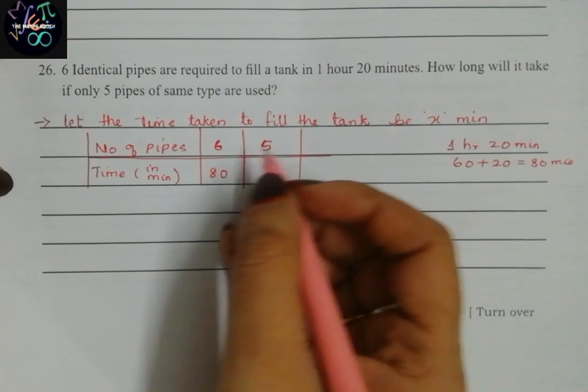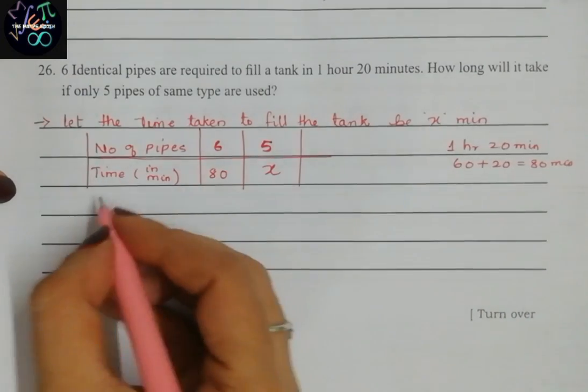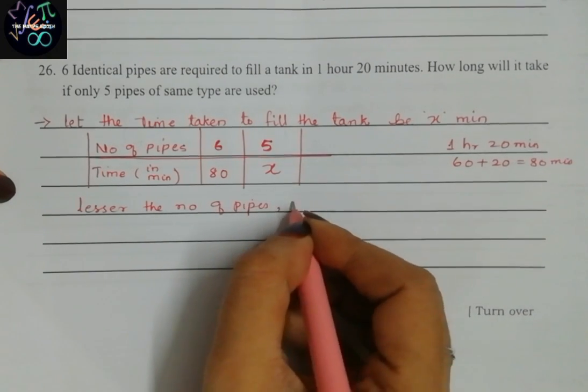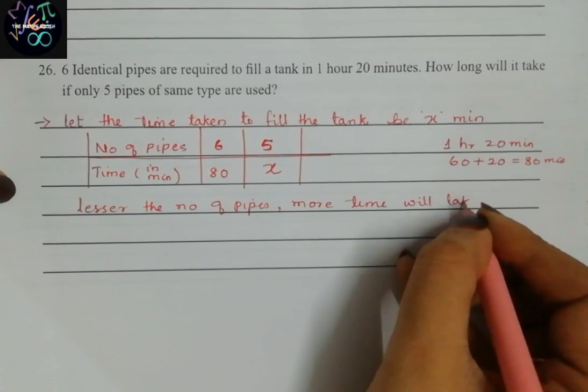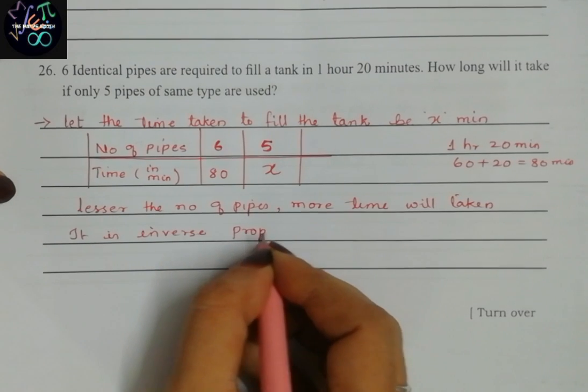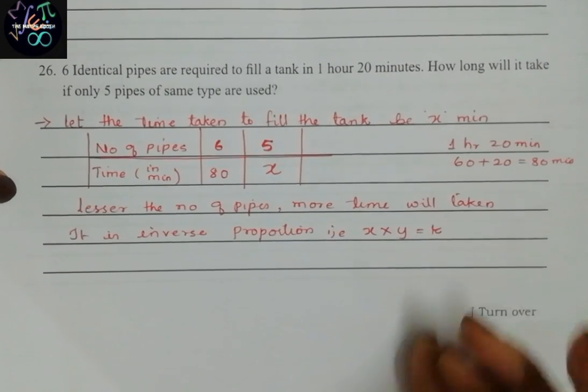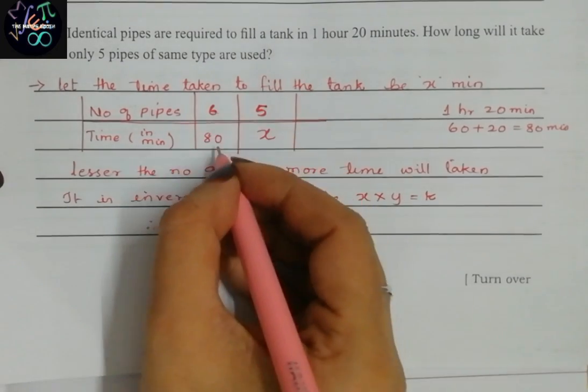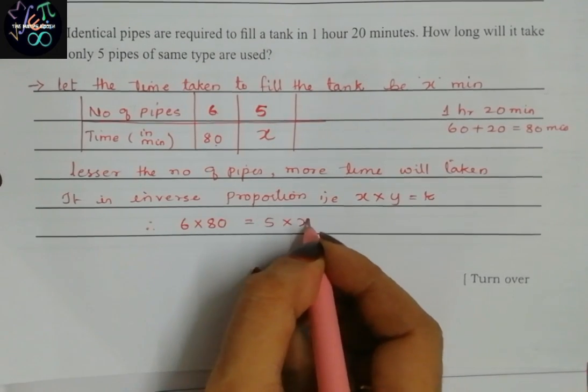We can see here that the lesser the number of pipes, more will be the time required. Here eighty minutes it has taken; if five pipes are there, how much time will it take? So I'll write: lesser the number of pipes, more time will be taken. That means it is inverse proportion. We know the condition for inverse proportion is that x into y is constant.